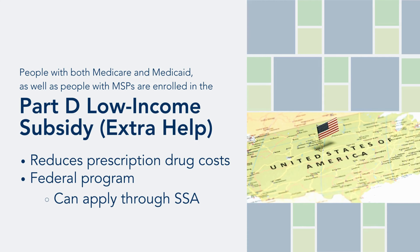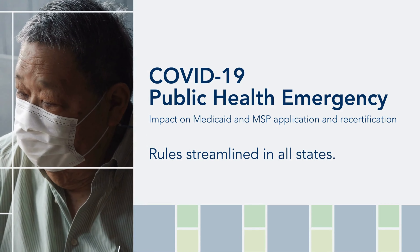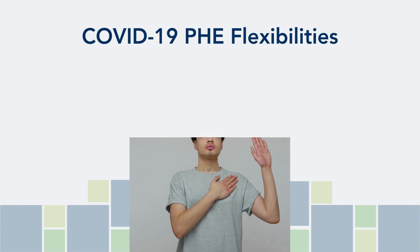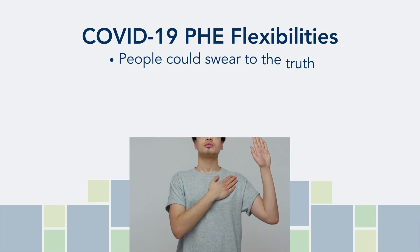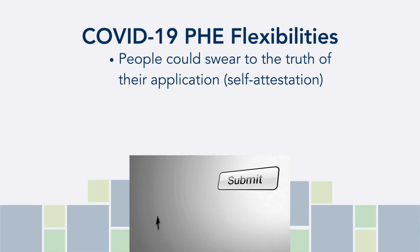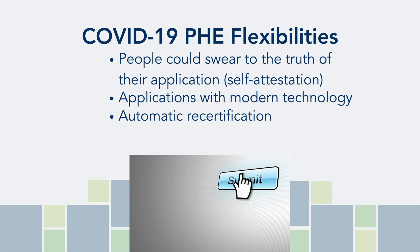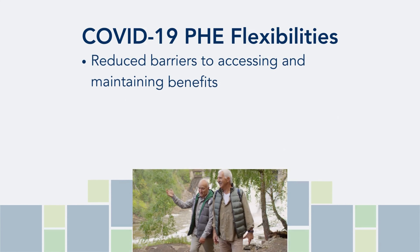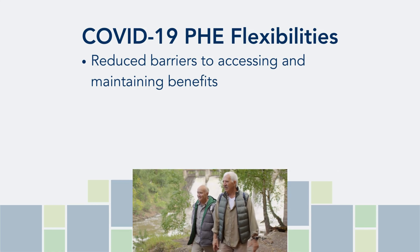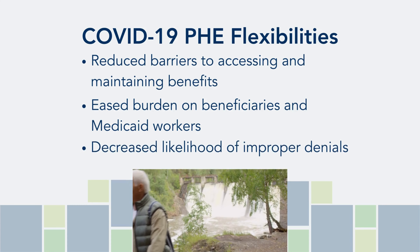During the COVID-19 public health emergency, Medicaid and Medicare savings program application and recertification rules were streamlined in all states. Instead of having to provide specific types of proof, people were able to swear to the truth of the answers in their applications, which is called self-attestation. People could also submit applications using modern technology instead of requiring pen and paper materials, and recertification was automatic. These changes reduced barriers to accessing and maintaining these crucial benefits, eased the burden on beneficiaries and Medicaid workers, and decreased the likelihood of improper denials.